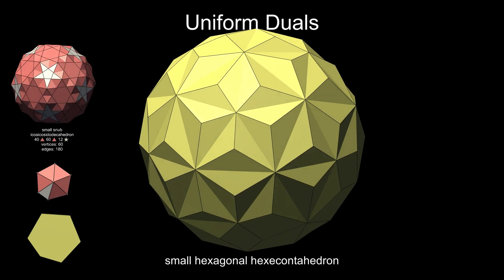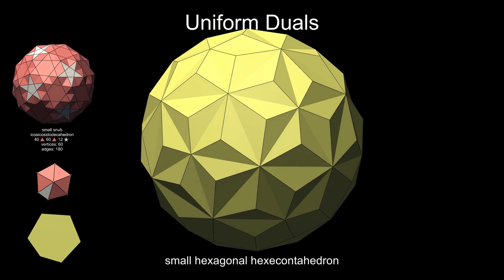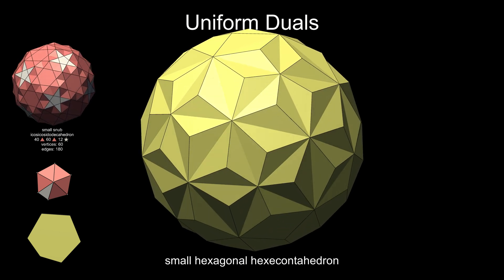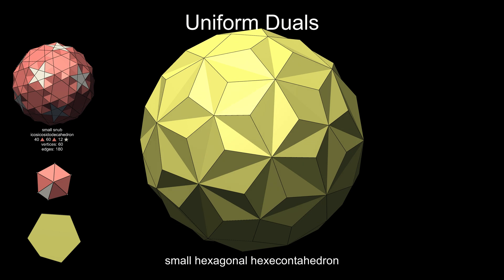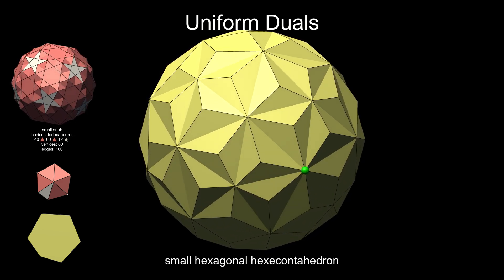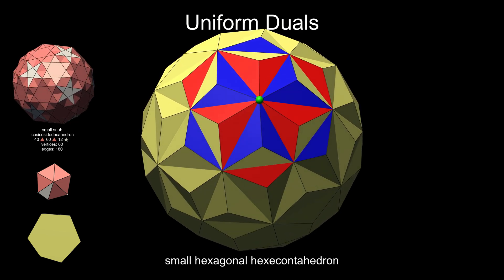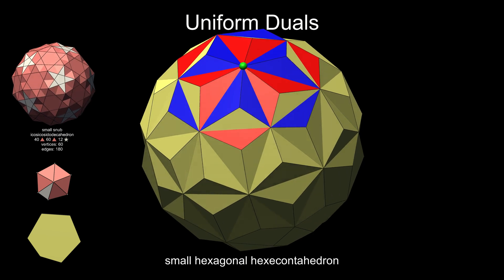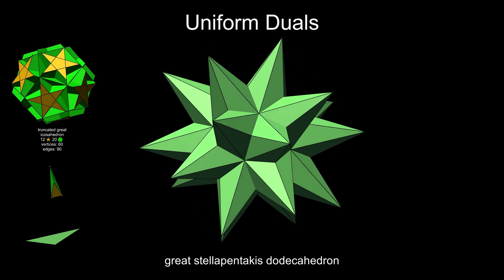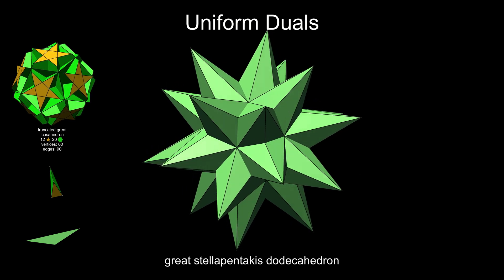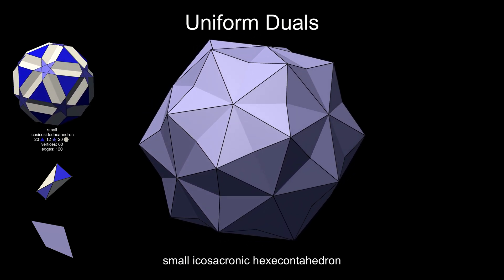The small hexagonal hexacontahedron is the dual of the small snub icosicosidodecahedron, which has coplanar faces. Consequently, it has double vertices — points where two topologically distinct vertices coincide. These are the vertices that look like hexagonal vertices, but are actually two triangular vertices at the same point. Concentrating on one green vertex, we can colour one set of surrounding faces blue and the other set red. Although the red faces intercept the blue faces, they do not share an edge. The great stellated pentakis dodecahedron has 20 visible hexagonal vertices and 12 hidden pentagrammic vertices. The small icosacronic hexacontahedron is a relatively spherical shape, as the faces don't penetrate far into the interior.